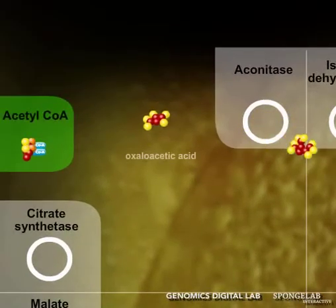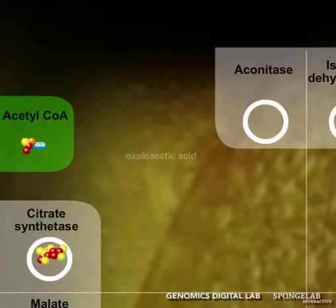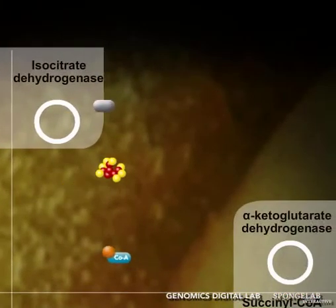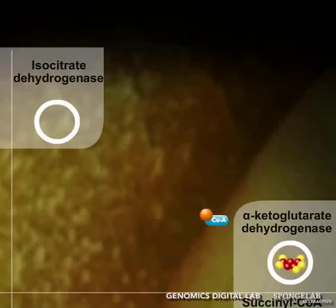Acetyl-CoA is combined with the four-carbon oxaloacetic acid to form the six-carbon citrate molecule. As you pass through the quadrants, that six-carbon molecule is chipped away back to the four-carbon oxaloacetic acid,